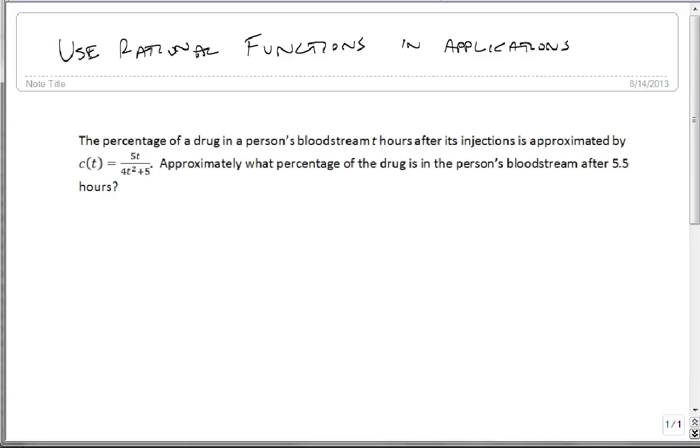Let's now use a rational function in an application. The percentage of drug in a person's bloodstream t hours after its injection is approximated by the function c of t equals 5t over 4t squared plus 5.